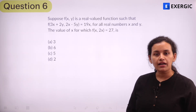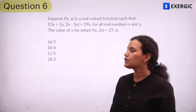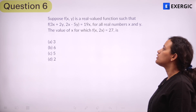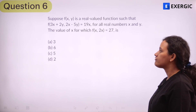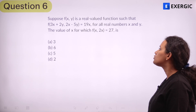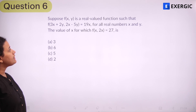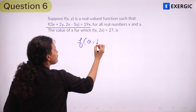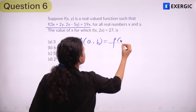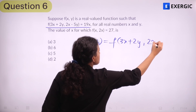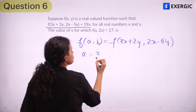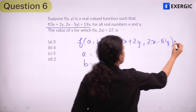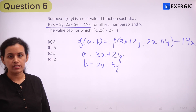For the next question, pause the video, read it, and give it a try. Suppose f(x, y) is a real-valued function such that f(3x + 2y, 2x − 5y) = 19x for all real numbers x and y. The value of x for which f(x, 2x) = 27 is what? Let a = 3x + 2y and b = 2x − 5y, so f(a, b) = 19x.